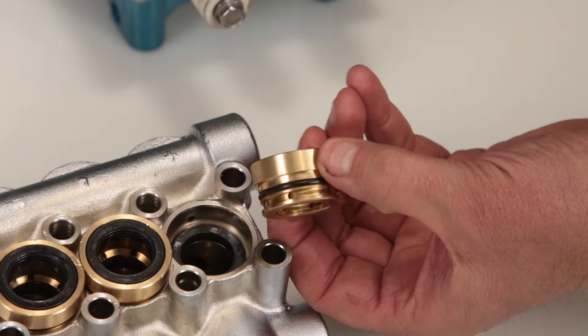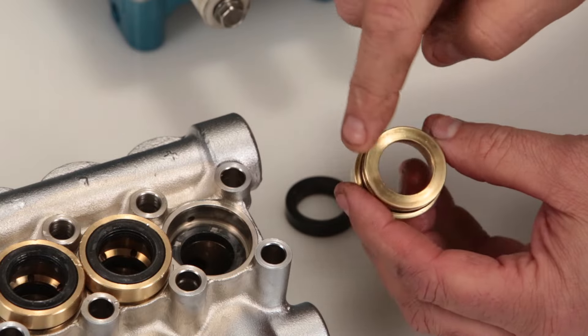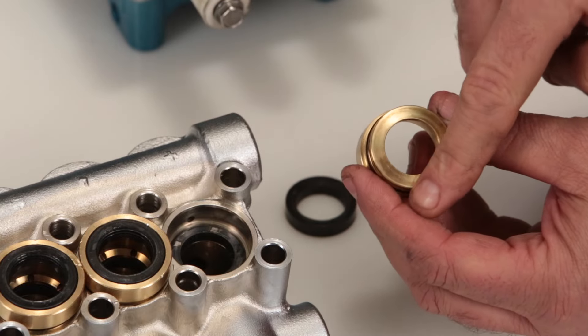Inspect the seal case o-rings for cuts, nicks or damage, and also the high pressure surface of the seal case for scoring or damage.